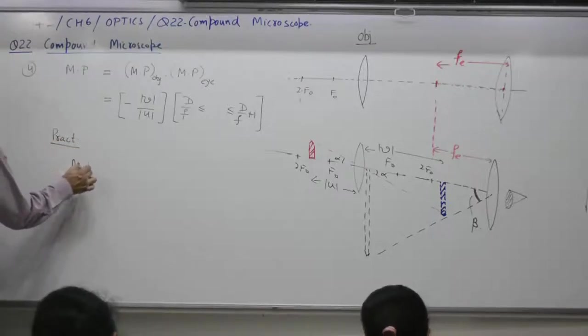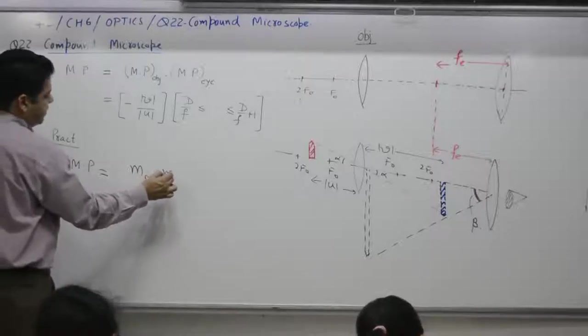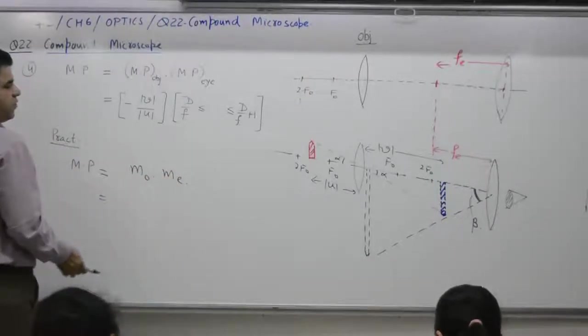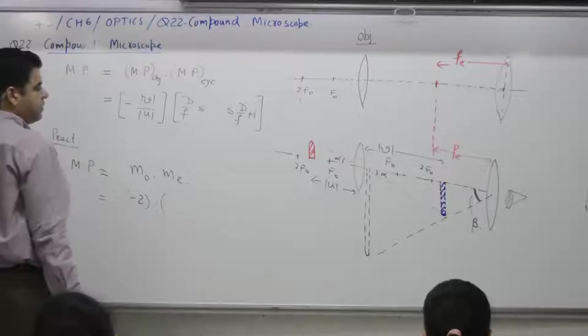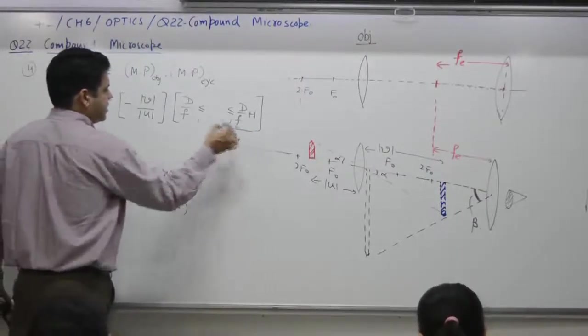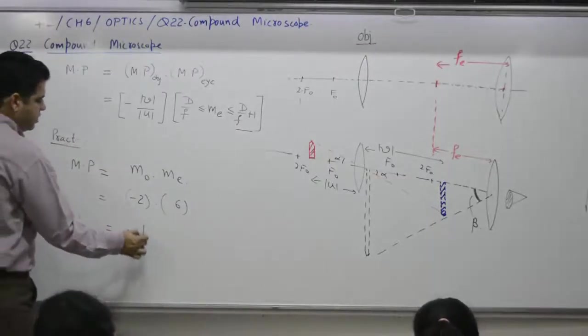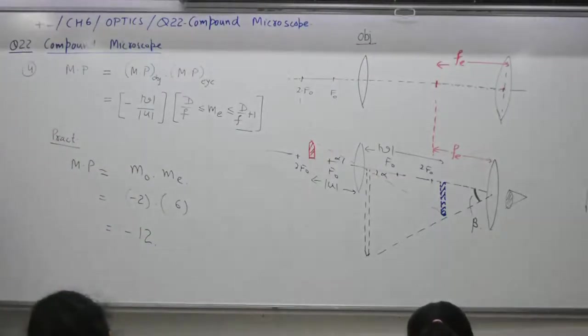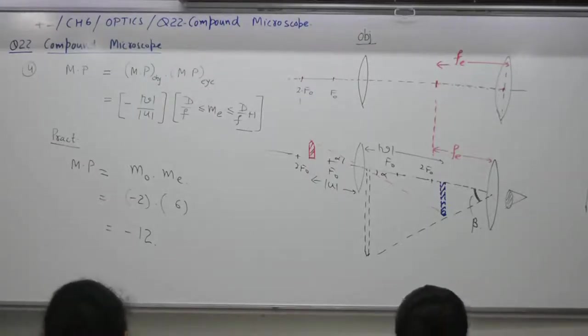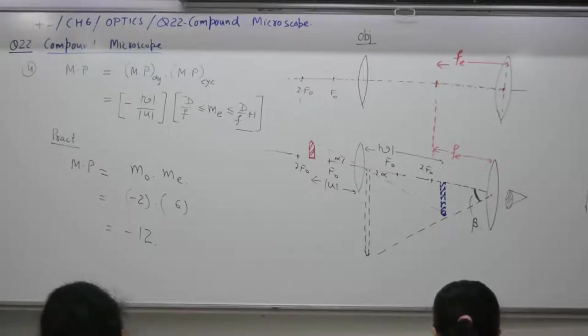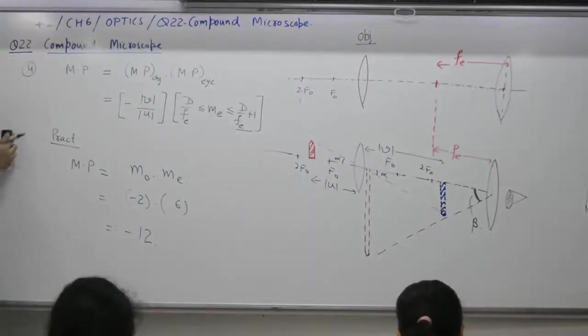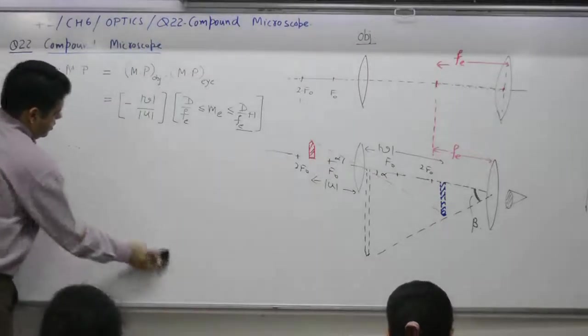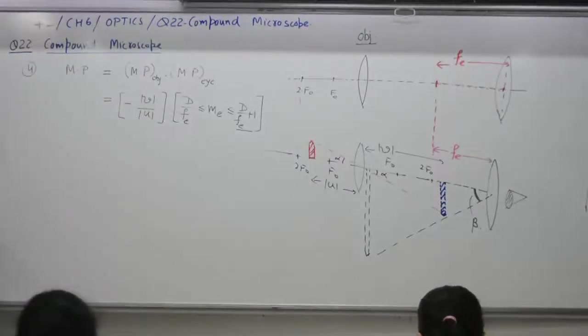Practical. Magnifying power is equal to magnifying power of objective, magnifying power of eyepiece. Magnifying power of objective will come out to plus or minus? This one. Minus. Say minus 2. Eyepiece say 6, when it is this case. Comes out what? Minus 2. One minute to complete. I need to write FE please, correction.